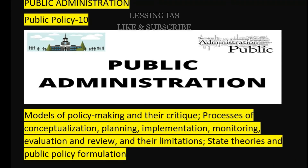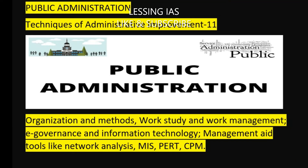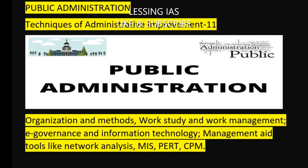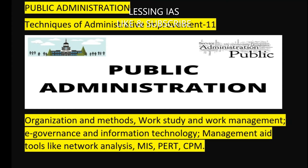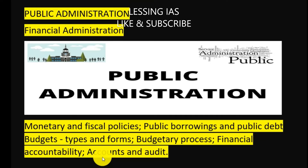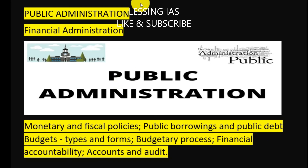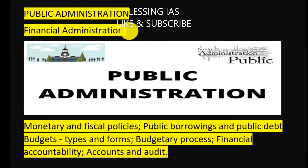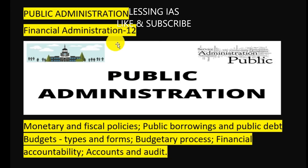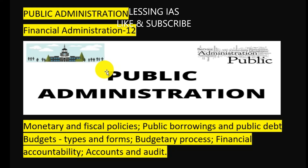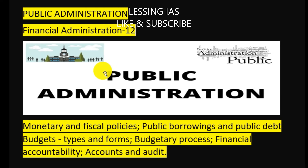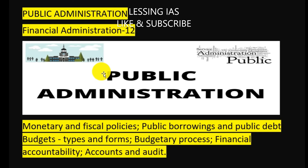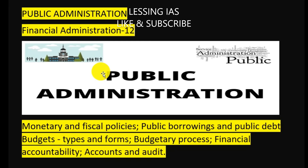The next chapter covers information technology management — aid tools like network analysis, MIS, PERT, and CPM. This is followed by chapter 12, financial administration, in which we would be discussing monetary and fiscal policies, public borrowings and public debts, budgets — their types, forms and the budgetary process — financial accountability, accounts and auditing.